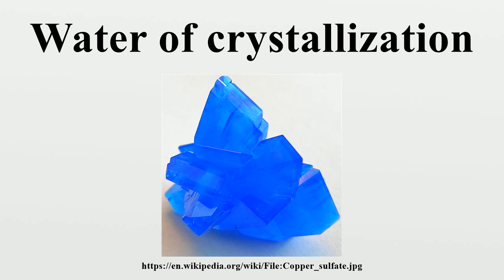A salt with associated water of crystallization is known as a hydrate. The structure of hydrates can be quite elaborate because of the existence of hydrogen bonds that define polymeric structures. Historically, the structures of many hydrates were unknown, and the dot in the formula of a hydrate was employed to specify the composition without indicating how the water is bound.